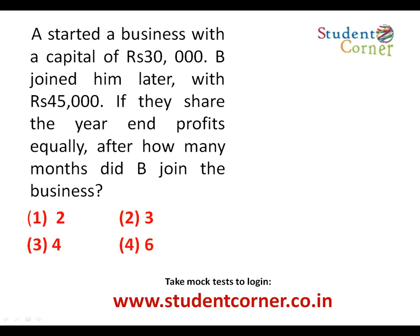The next question: A started a business with capital of thirty thousand rupees and B joined him later. The profit is shared equally, meaning the ratio is one is to one. A invested thirty thousand for twelve months. B invested forty-five thousand for K months. Since the profit share is equal — one is to one — the product of extremes equals the product of means.